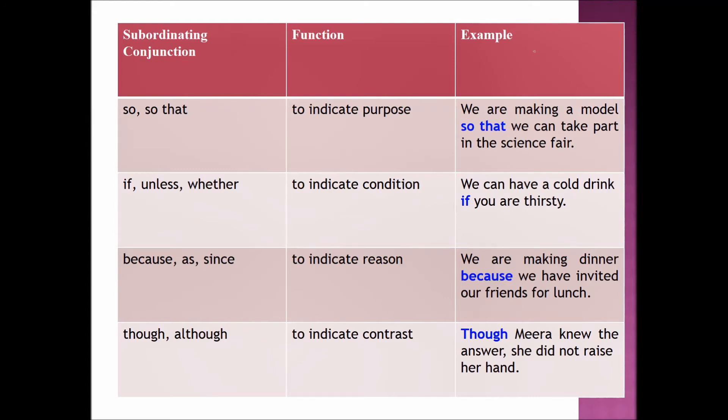The words 'if', 'unless', and 'whether' function to indicate condition. Example sentence: 'We can have a cold drink if you are thirsty.' The words 'because', 'as', and 'since' function to indicate reason. Example sentence: 'We are making dinner because we have invited our friends for lunch.'